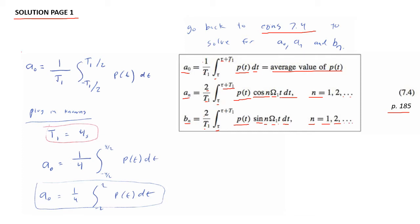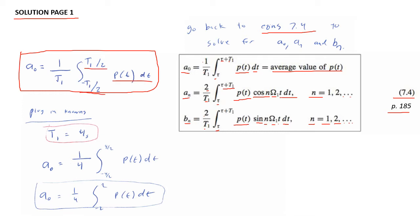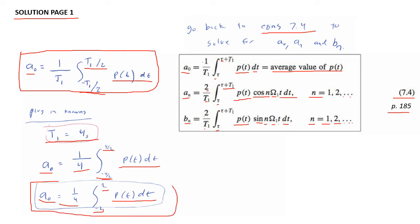First, let's solve for a₀. From equations 7.4, a₀ = (1/T₁) times the integral from −T₁/2 to T₁/2 of p(t)dt. Plugging in T₁ = 4 seconds, a₀ = (1/4) times the integral from −2 to 2 of p(t)dt. So we now have our expression for a₀.